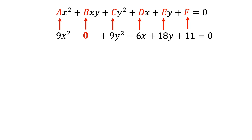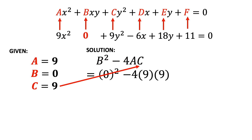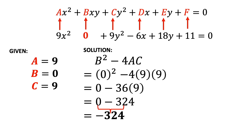Therefore, my given are A = 9, B = 0, and C = 9. In step 2, I know that I need to substitute the given to the discriminant formula. Therefore, I will have (0)² minus 4 multiplied by 9 multiplied by 9. Following PEMDAS, I will simplify the given. Working on the parenthesis and exponent first, 0 raised to the second power will give me 0. Then minus 4 multiplied by 9 is 36, then multiply by 9 again. 0 minus 36 multiplied by 9 is 324. Then, 0 minus 324. Therefore, the discriminant is negative 324.